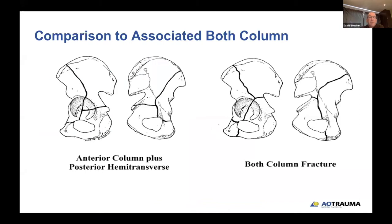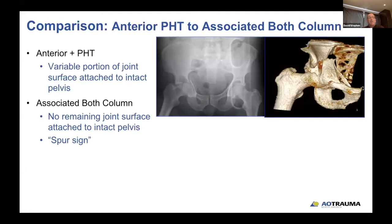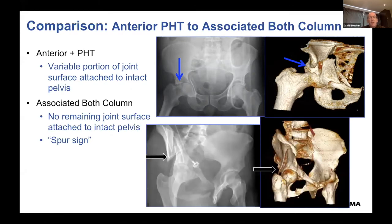Comparing to the associated both column: as you'll hear from Dr. Mayo, in the associated both column there is no remaining attachment of the acetabular roof or joint surface to the intact ilium, as compared to the anterior column posterior transverse where a small or variable portion is attached to the intact ilium. The associated both column shows no remaining joint surface attached to the intact pelvis and demonstrates the spur sign, which Dr. Mayo will explain.